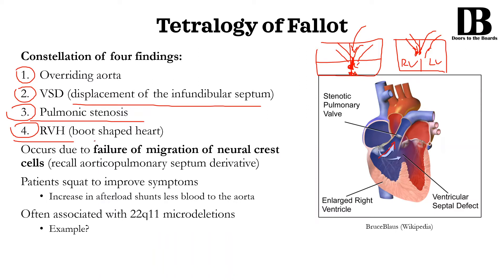The very classic buzzword they like to use is a boot-shaped heart on x-ray. It's really important to be able to recall what went wrong here — if you remember that this aorticopulmonary septum was being formed by the neural crest cells, then it shouldn't surprise you that failure of migration of these neural crest cells is actually what causes tetralogy of Fallot.